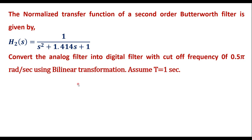In this video I will consider one numerical on designing a digital filter using bilinear transformation. The normalized transfer function of a second-order Butterworth filter is given by H₂(s) = 1 / (s² + 1.414s + 1). Convert the analog filter into a digital filter with cutoff frequency of 0.5π radians per second using bilinear transformation. Assume T = 1 second.